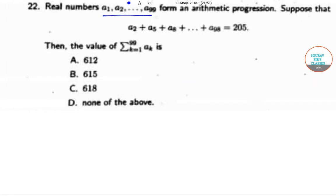The next question: real numbers a₁, a₂ up to a₉₉ form an arithmetic progression. Suppose that a₂ plus a₅ plus a₈ up to a₉₈ equals 205, then find the value of the summation k equals 1 to 99 of aₖ. We know that the sum of an AP is equal to n/2 into (a + L), where a is the first term and L is the last term.